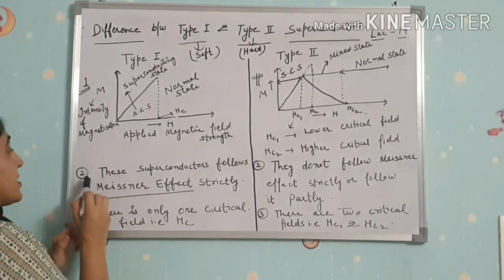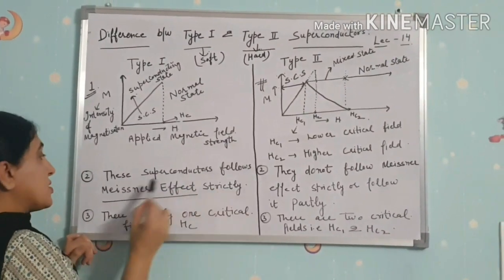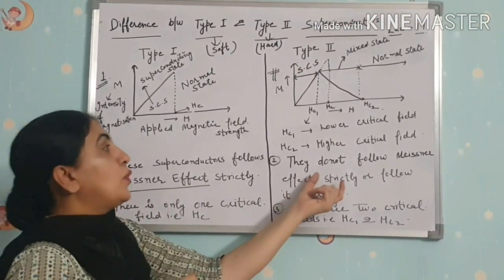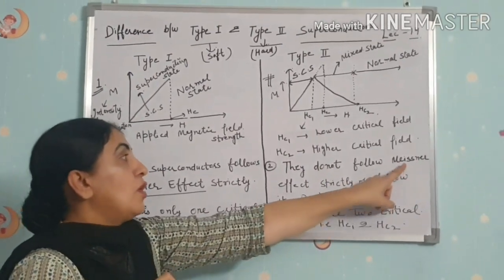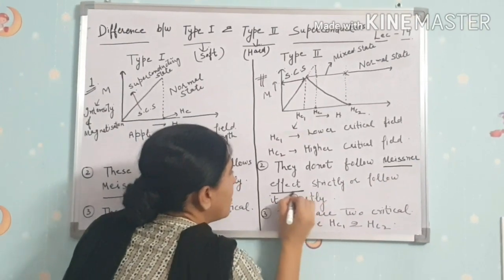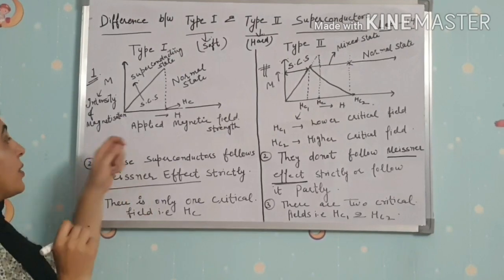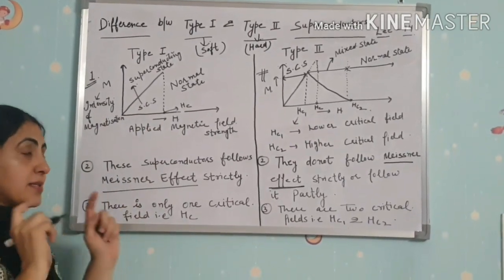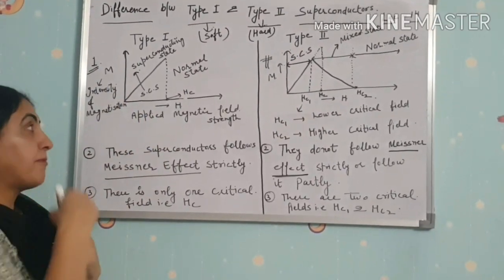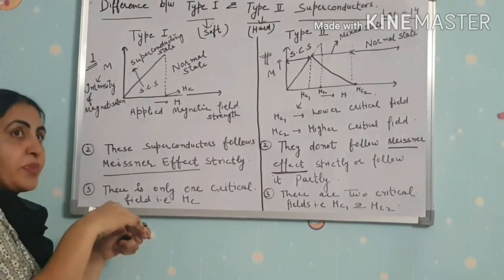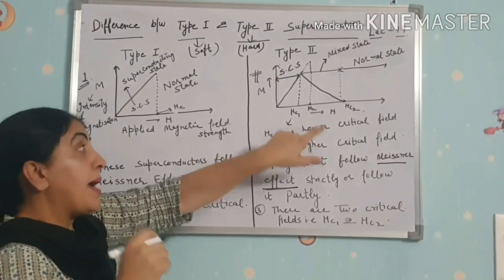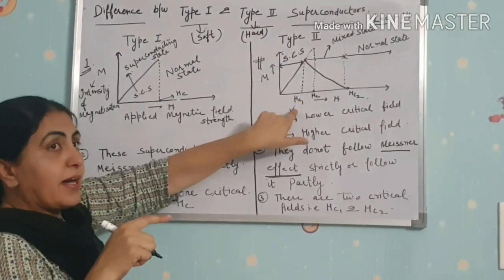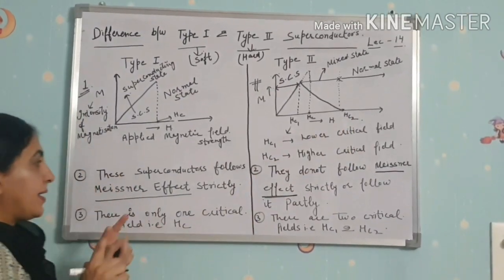Second difference is about the Meissner effect. Type 1 superconductors follow the Meissner effect strictly — magnetic flux does not penetrate into the superconductor below Hc, and after Hc the flux penetrates completely. Type 2 superconductors do not follow the Meissner effect strictly; they follow it only partially, up to Hc1.